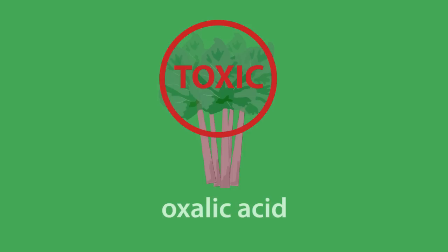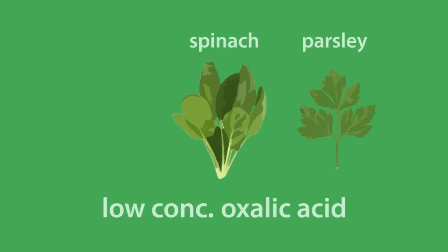Rhubarb leaves are toxic because of a high concentration of oxalic acid. Oxalic acid, however, is still found in low concentrations in spinach, parsley, and chives.